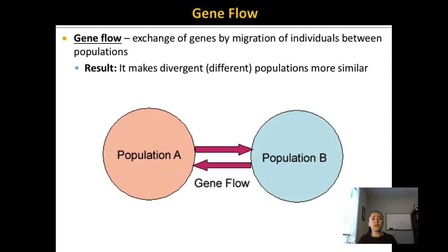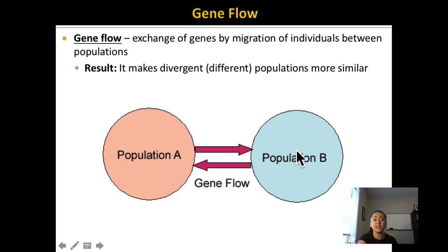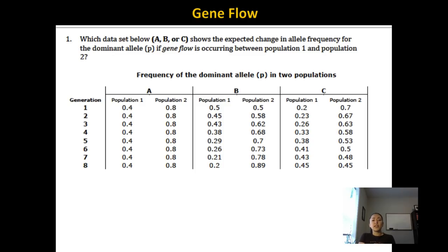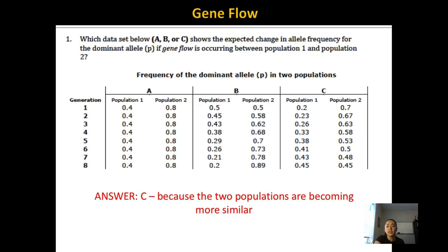Gene flow is defined as the exchange of genes by migration of individuals between populations. If two populations are very different at the beginning, over time they become more similar because genes are mixing between them. When looking at a graph, if the frequency of the dominant allele in two populations starts very different but converges over generations, that suggests gene flow is occurring between the two populations.